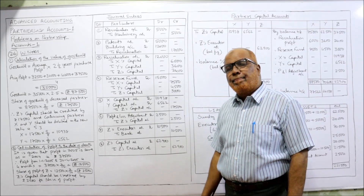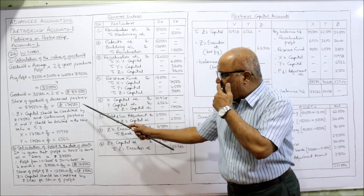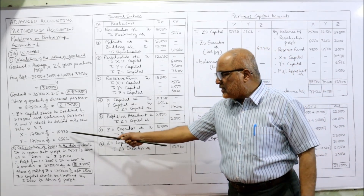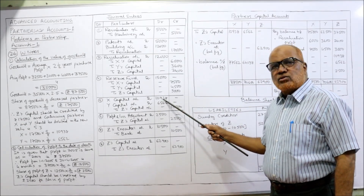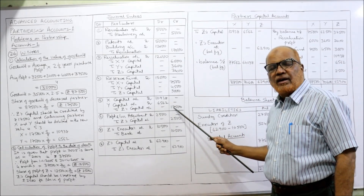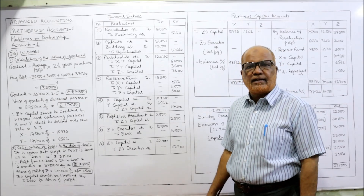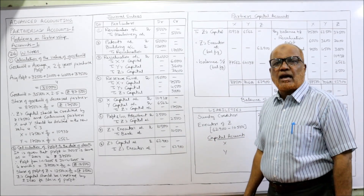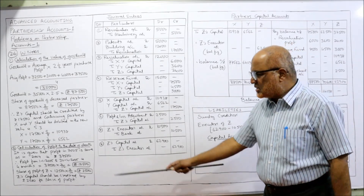Adjustment for goodwill: Z's capital account is credited by 17,500 and X and Y capital accounts are debited. Entry: X Capital Dr. 10,938, Y Capital Dr. 6,562 to Z Capital 17,500. Being the share of goodwill of Z credited to Z's capital account. Then: Profit and Loss Adjustment Account Dr. to Z Capital 2,500 — being the share of profit of the deceased partner for four months.